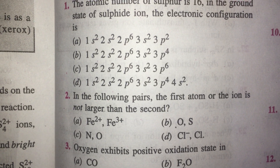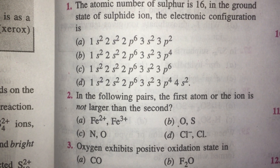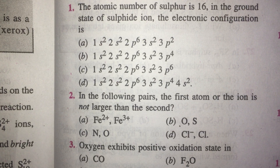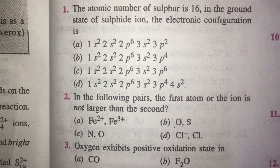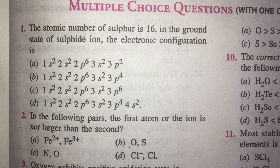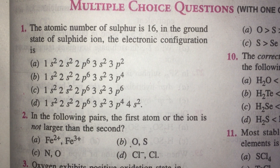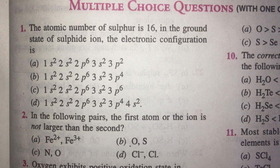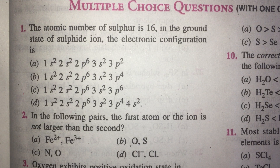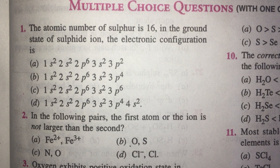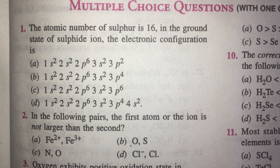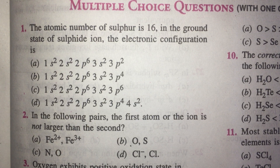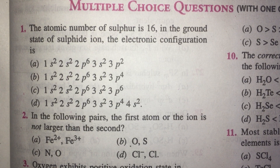Welcome to our quick exploration of questions from the 16th group, that is the oxygen-sulfur family. The atomic number of sulfur is 16. In the ground state, the sulfide ion is S2- and it has 18 electrons. Its configuration is similar to that of argon: 1s2, 2s2, 2p6, 3s2, 3p6.